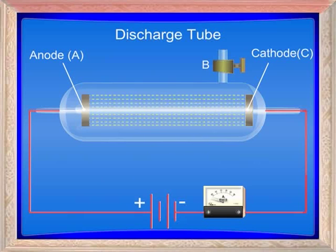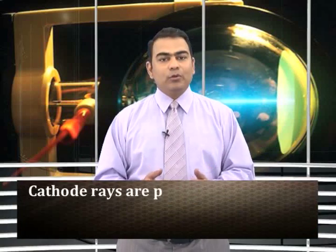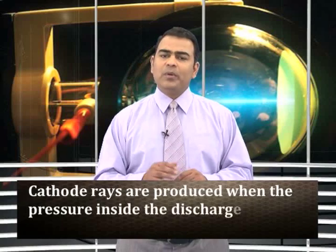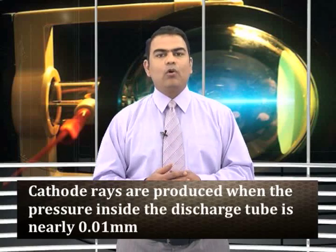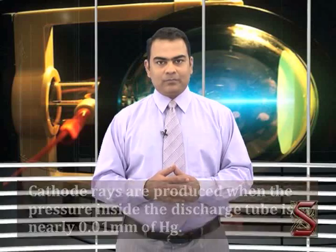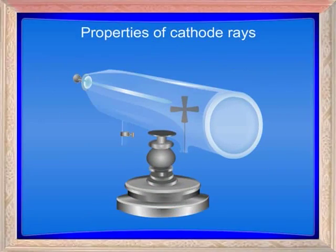The milliammeter connected in the circuit shows the conduction of electricity. Cathode rays are produced when the pressure inside the discharge tube is nearly 0.01 mm of mercury.